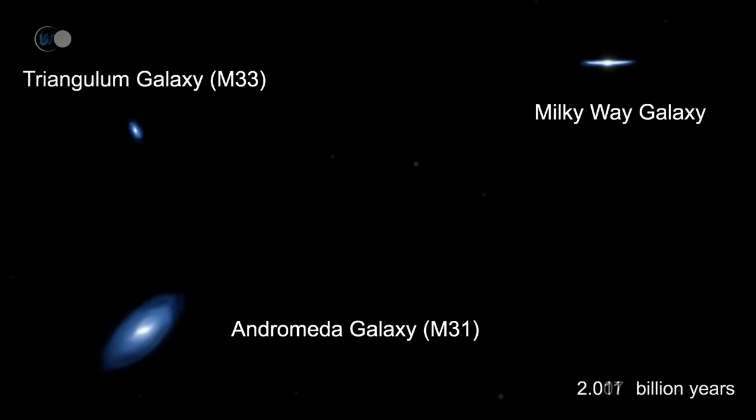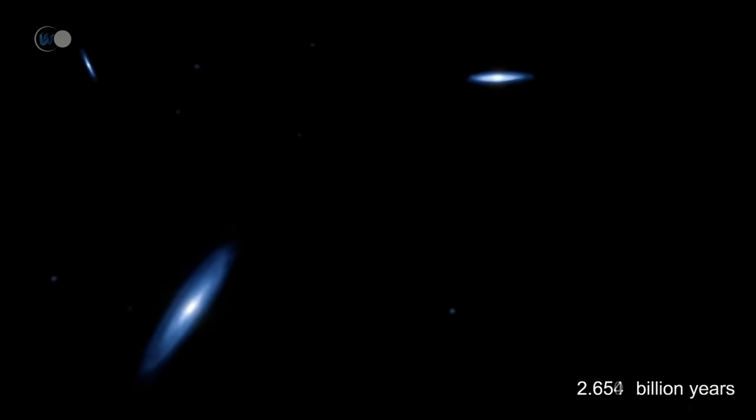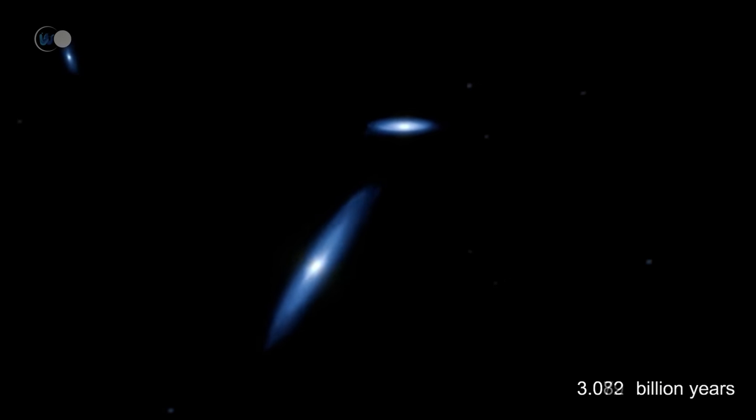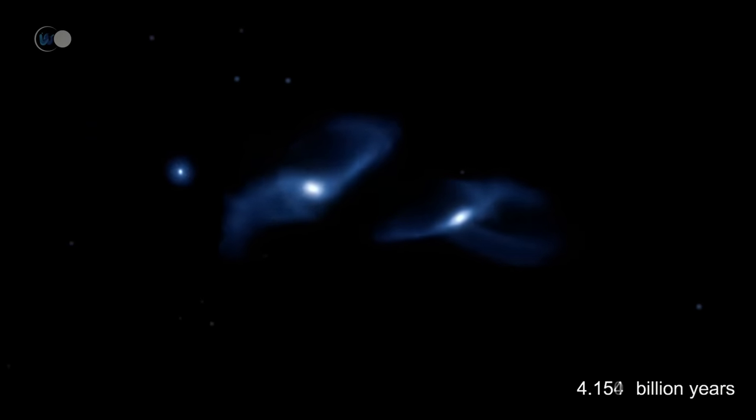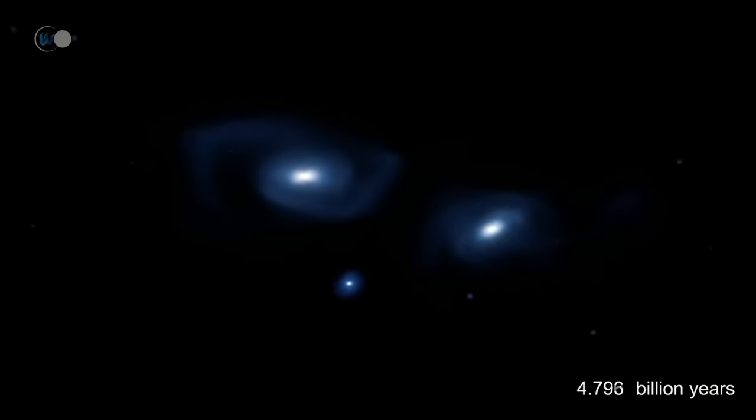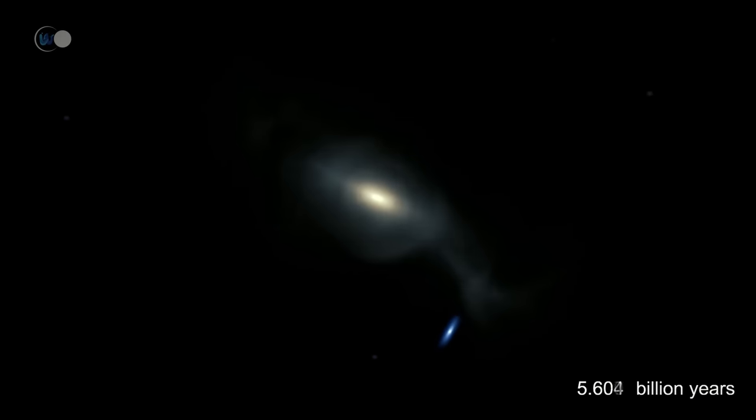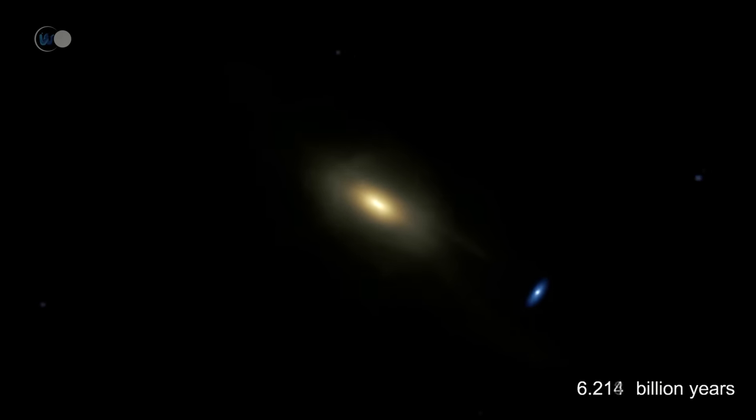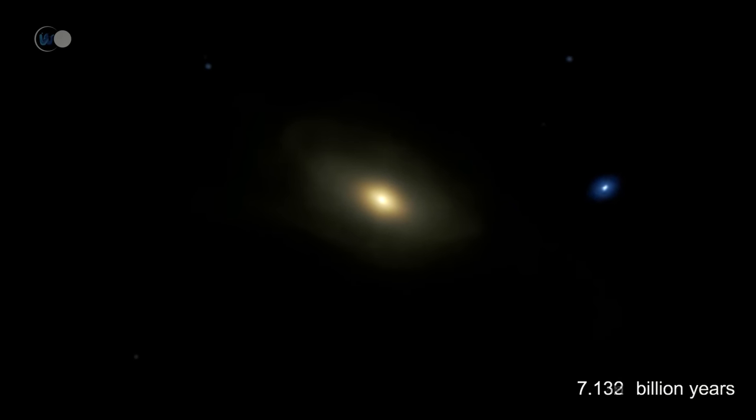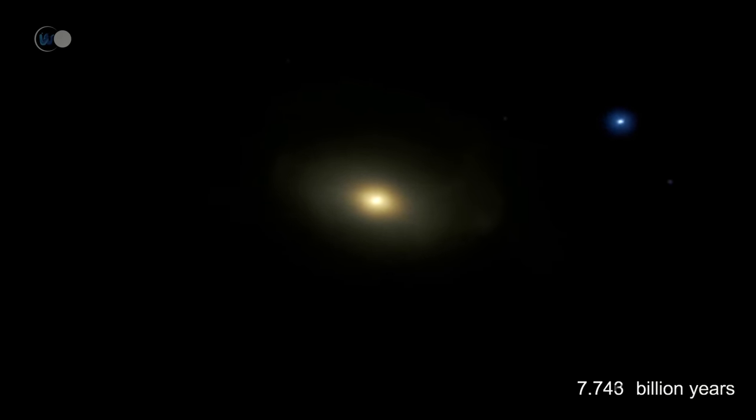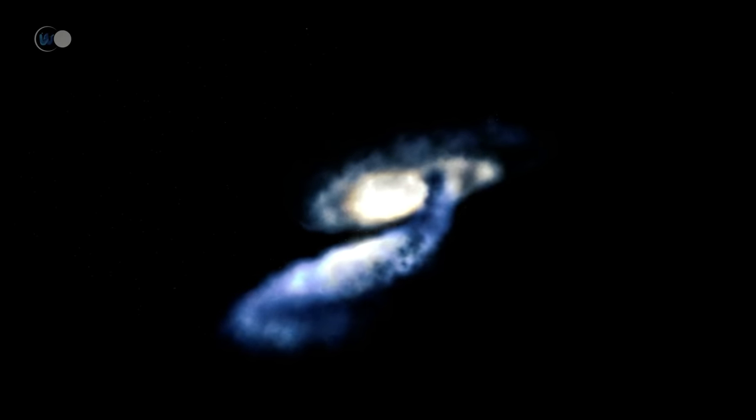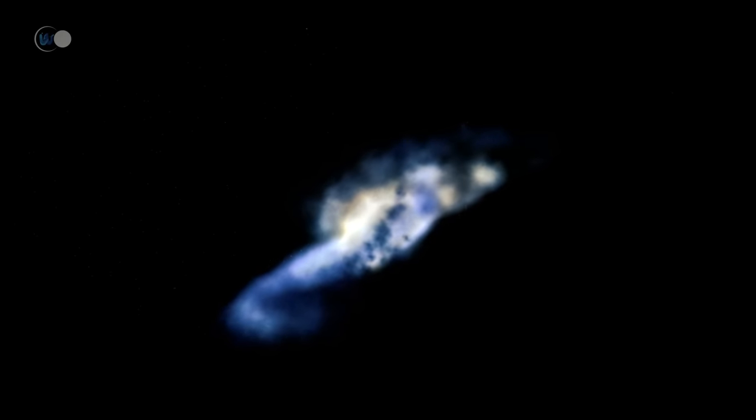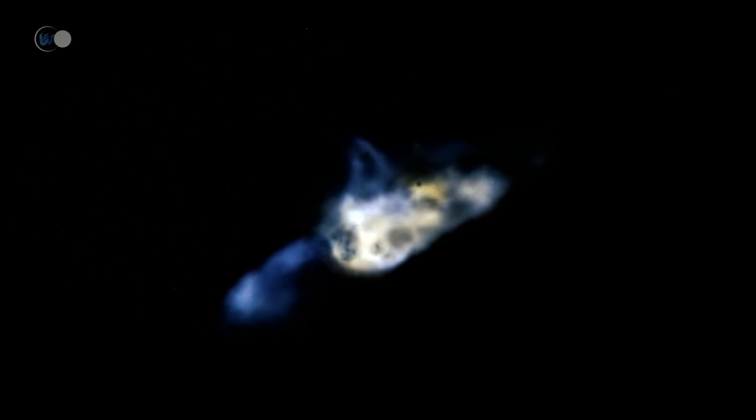In about 4 billion years, the local group will see the Milky Way and the Andromeda Galaxy collide. Two billion years later, they will merge to form a single giant elliptical galaxy. The Sun and its planets could be catapulted into space because of gravitational disturbances. The Triangulum Galaxy, meanwhile, may collide with the Milky Way a little earlier. It may end up orbiting the giant elliptical galaxy that will form during the collision between the Milky Way and the Andromeda Galaxy.